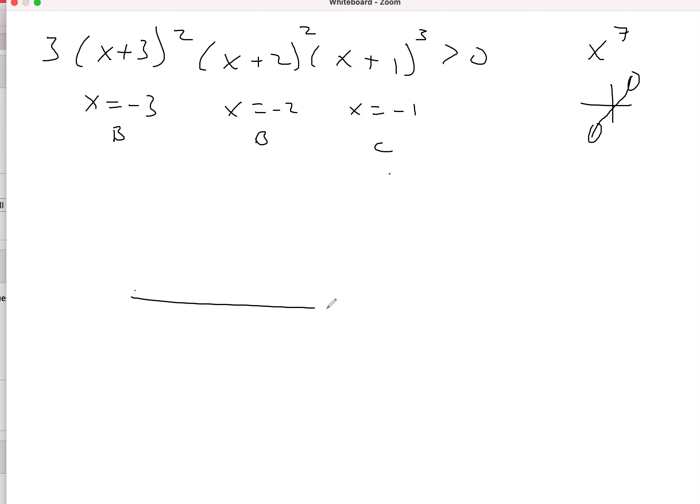So from there, negative 1, negative 2, negative 3. Let's see. So we're going to come in from the bottom. We are going to bounce off of negative 3. And that negative 2 is just to bounce again. And at negative 1, we are supposed to cross.